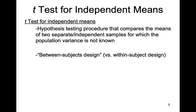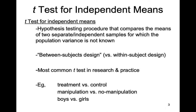An independent means t-test is used when we have a between-subjects design, in contrast to a within-subjects design. With our t-test for dependent means, we had a within-subjects or repeated measures design where we got two measurements from the same person. With the between-subjects design, we get a single observation from two different groups of people. This is the most common t-test used in research as well as applied practice situations.